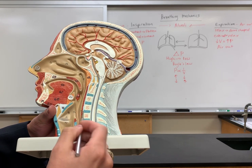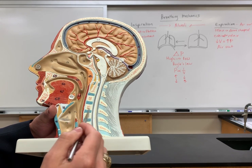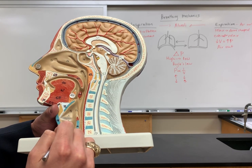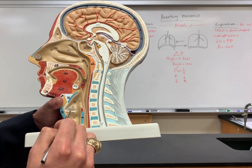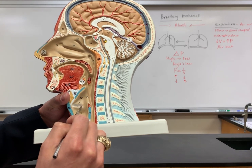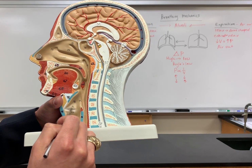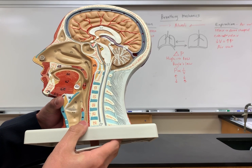Now let's look at some of the structures within the larynx. Number 77 is the true vocal cords, and number 76 is the false vocal cords.